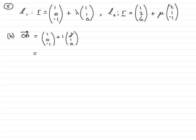And if we work that out, you've got 1 plus 1 which is 2, then 0 and 1 which is 1, and minus 1 and nothing else is minus 1. So O to A then is (2, 1, -1), that's its position vector.